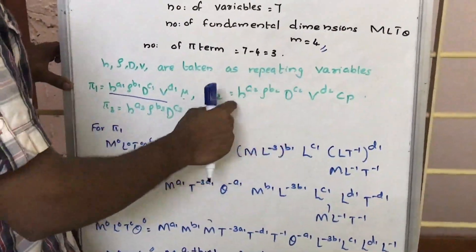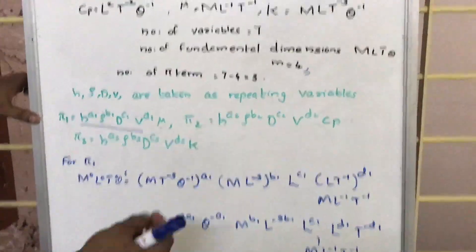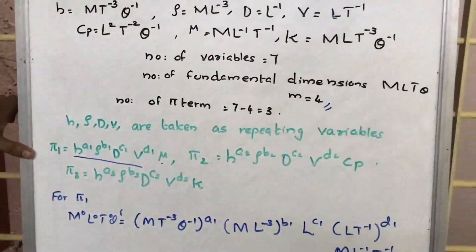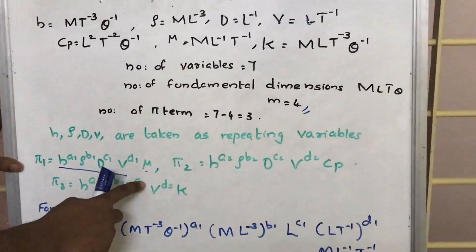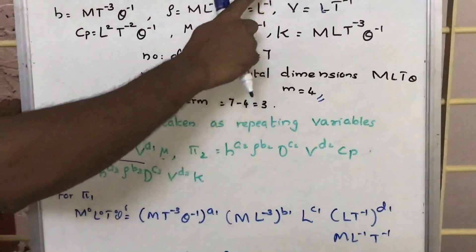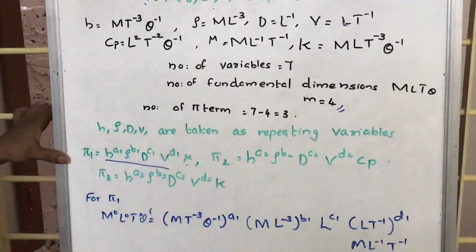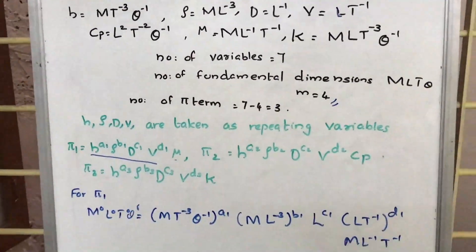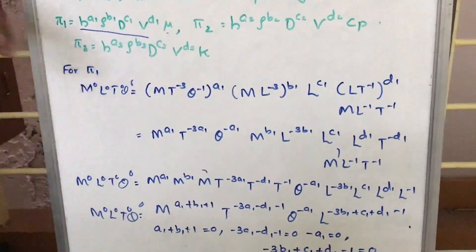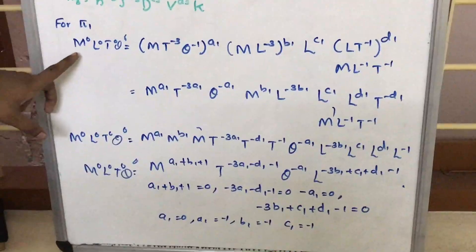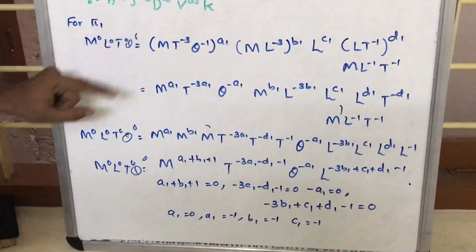Cp can be found only in pi 2, so Cp is written as Cp itself with no additional power. Similarly, for pi 3, it is H raised to A3, rho raised to B3, D raised to C3, V raised to D3. Only K is not repeating, so K is written here with power 1. Each pi term is a non-dimensional quantity, so it is equal to M raised to 0, L raised to 0, T raised to 0, theta raised to 0.